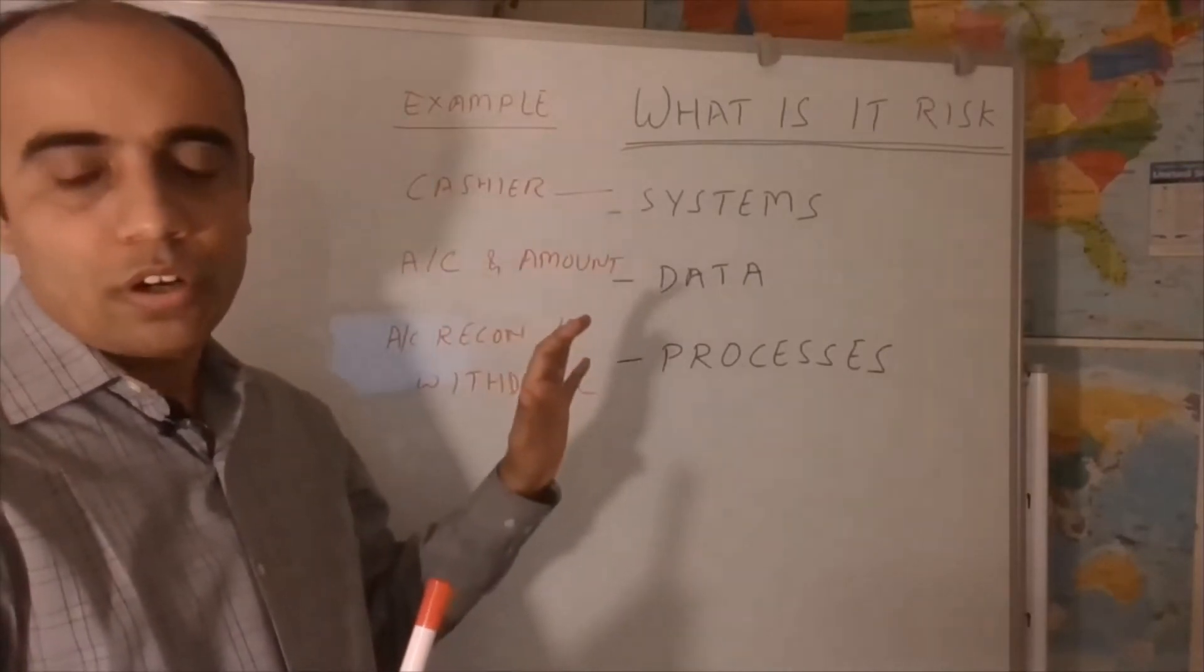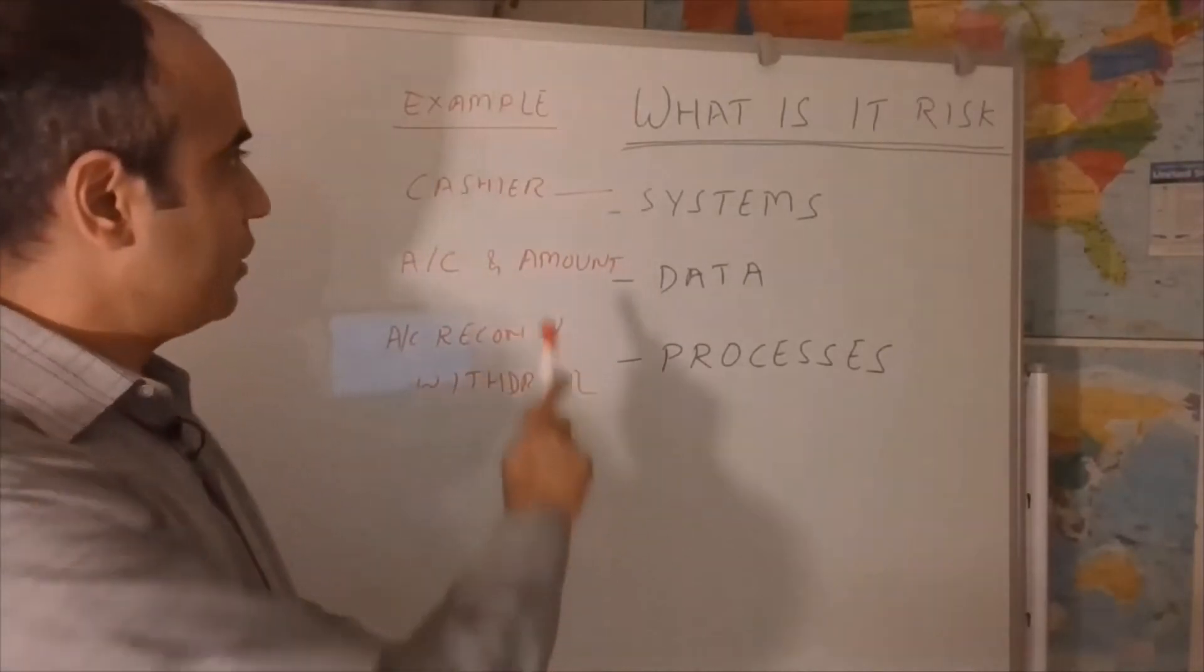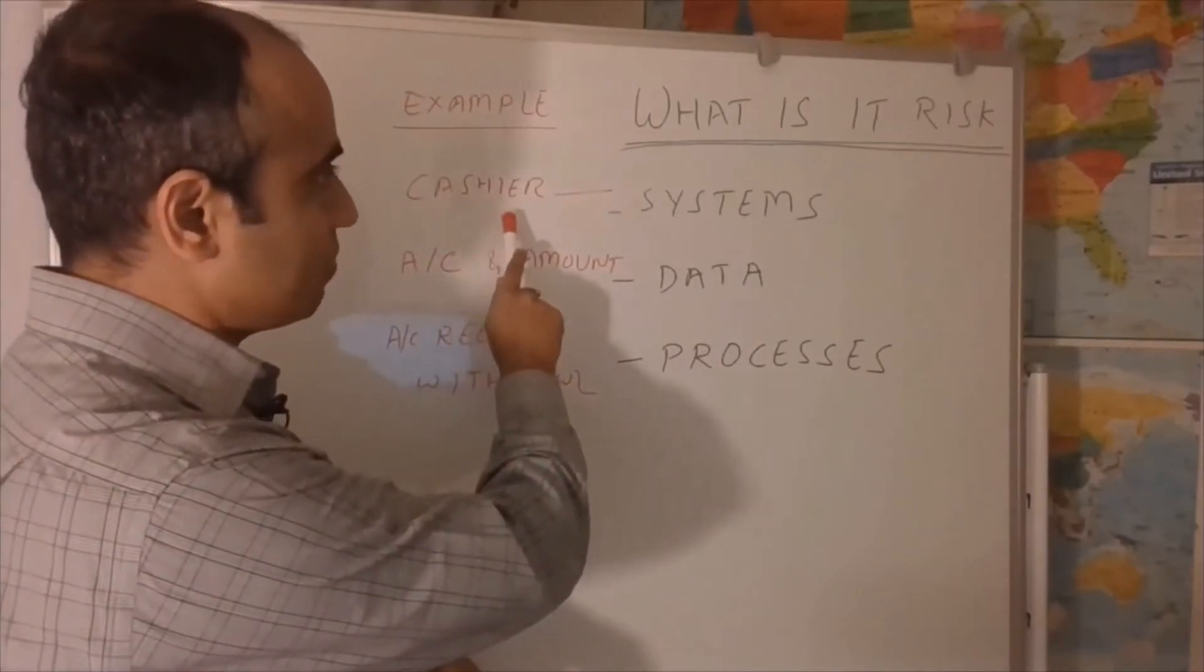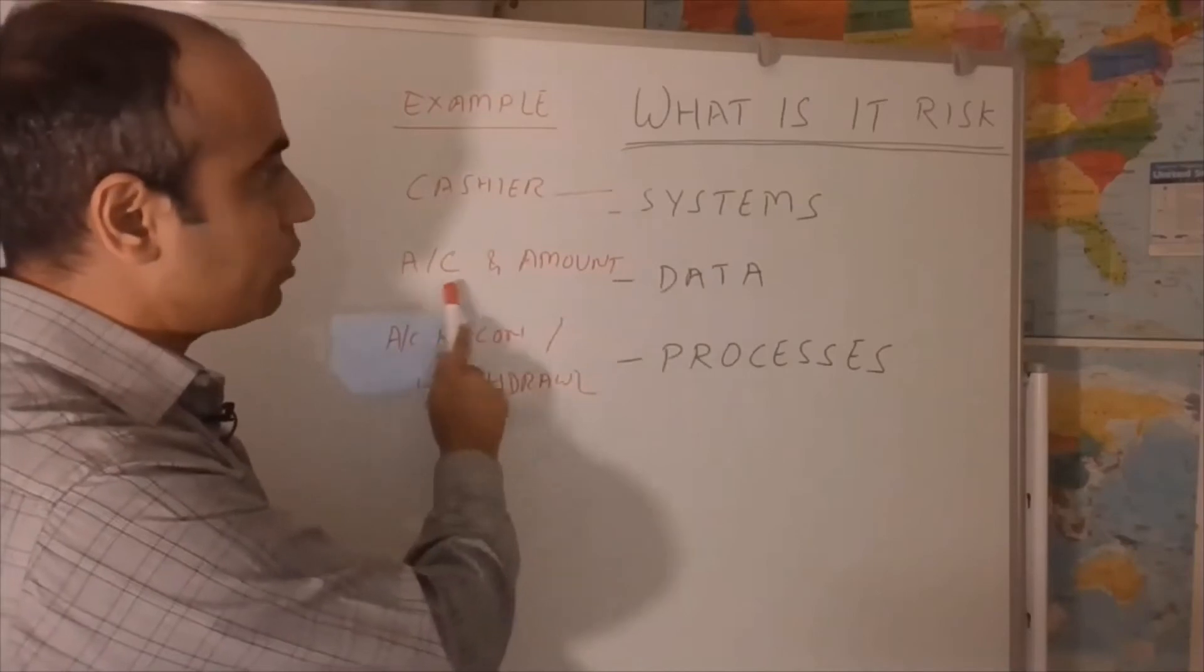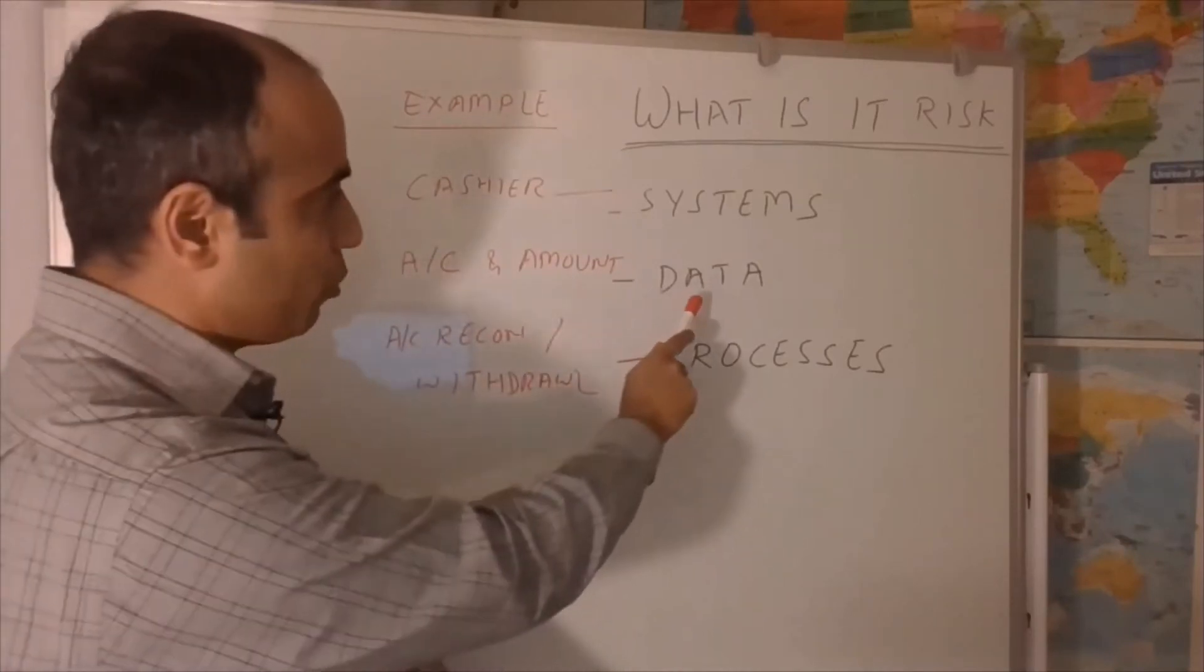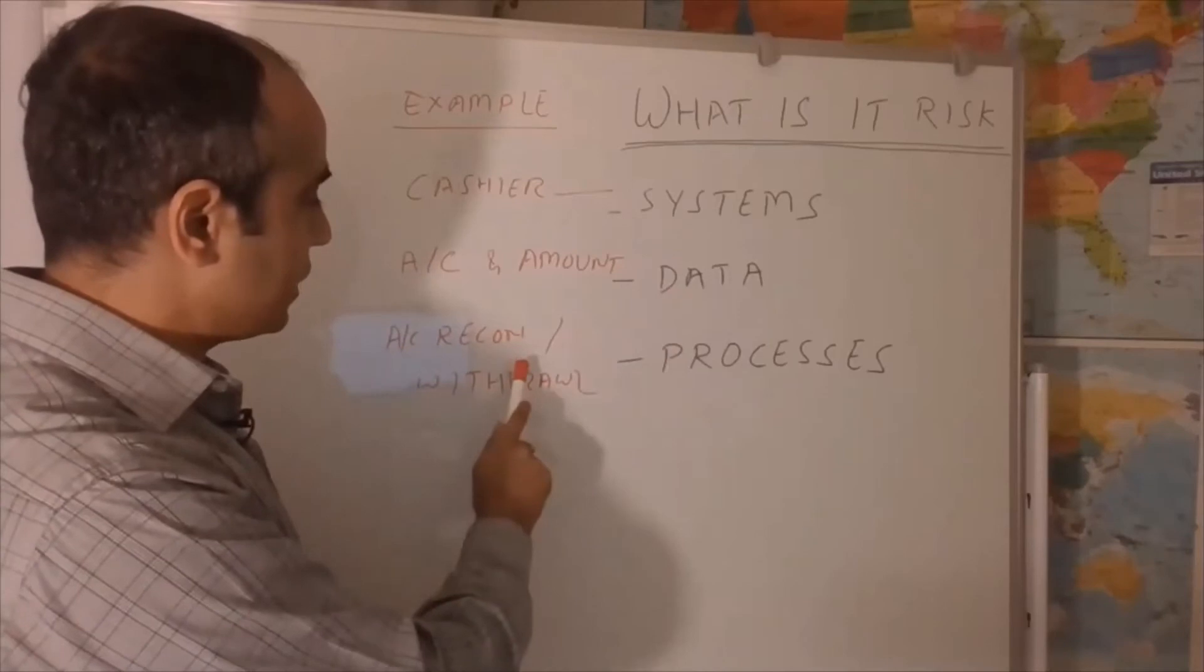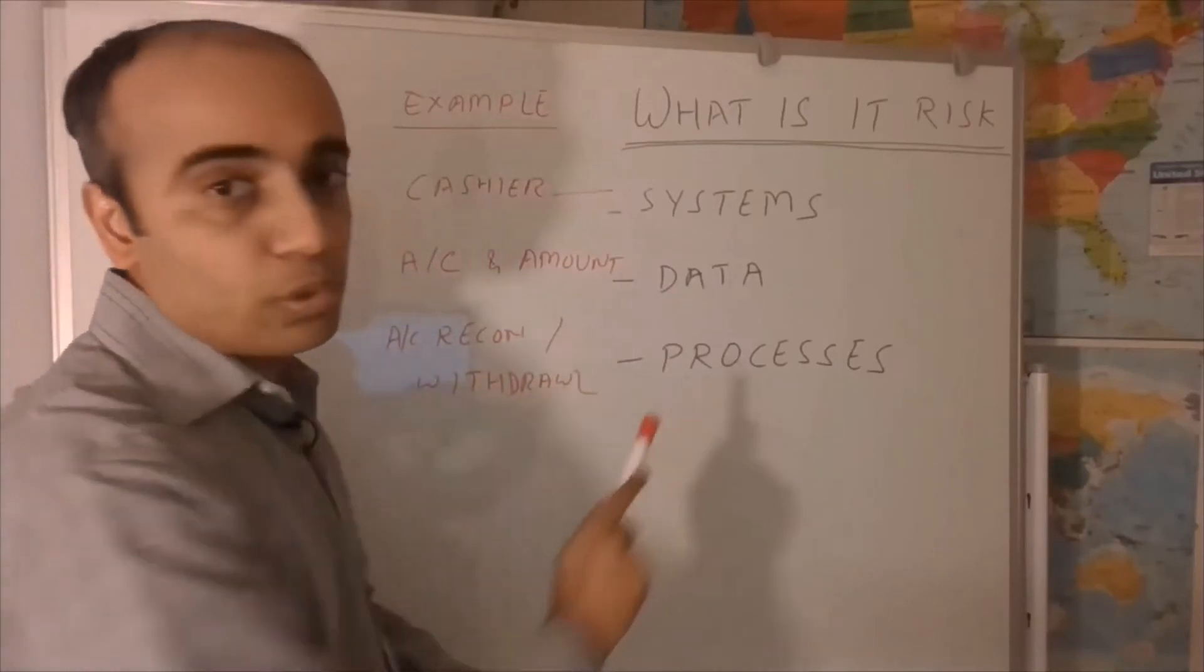The example we took of the cashier in the bank, the cashier system becomes our systems. The account and amount are our data points. Account reconciliation and withdrawal are the processes.